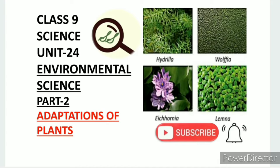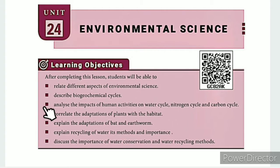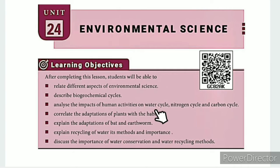Greetings from SS Class 9 Science Unit 24 Environmental Science Part 2: Adaptations of Plants. In this lesson, you will learn to relate different aspects of environmental science, describe bio-geochemical cycles, and analyse the impacts of human activities.